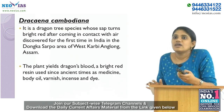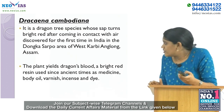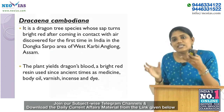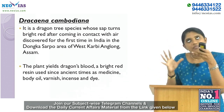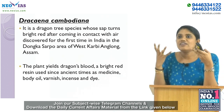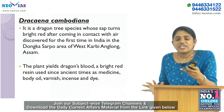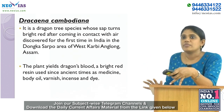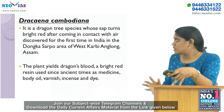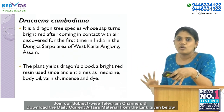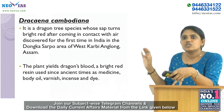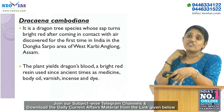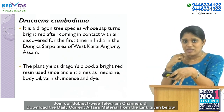The next topic is Dracaena cambodiana, a particular type of dragon tree species. Its sap turns bright red after coming in contact with air. It was discovered for the first time in India in the Donkamokam area of West Karbi Anglong in Assam.